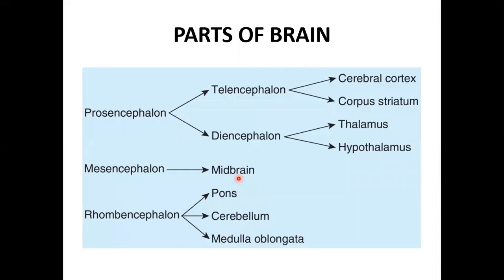Parts of the brain develop from three brain vesicles: the prosencephalon (forebrain), the mesencephalon (midbrain), and the rhombencephalon (hindbrain). The prosencephalon develops into the telencephalon and diencephalon; the telencephalon gives rise to the cerebral cortex and corpus striatum, while the diencephalon gives rise to the thalamus and hypothalamus. From the mesencephalon develops the midbrain, and from the rhombencephalon develop the pons, medulla, and cerebellum.